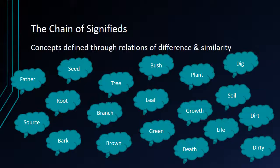Every concept is going to be defined through relations of difference and similarity to other concepts. So the word 'tree' is going to be connected to all sorts of different concepts, which themselves branch out into other concepts. Tree might suggest bush, which might suggest plant, which might suggest dig, which might suggest soil, which might suggest dirt, which might suggest dirty. Tree might suggest leaf, which might suggest green, which suggests growth, which suggests life, which might suggest death. Tree can suggest brown, which might suggest bark. Tree can go to seed, root, source, father. Any one concept is going to be linked through its relationships to a potentially infinite network of concepts — it's a whole web of meaning.